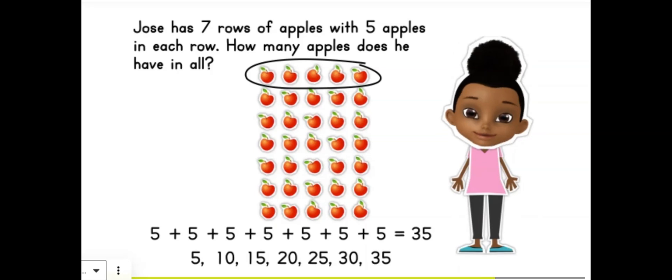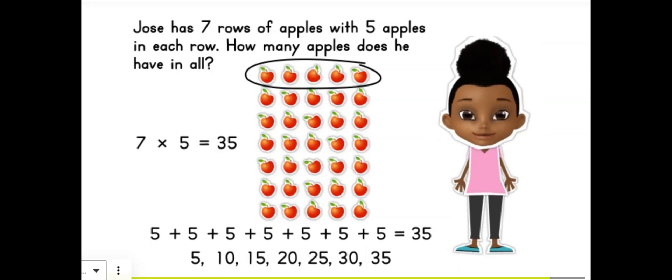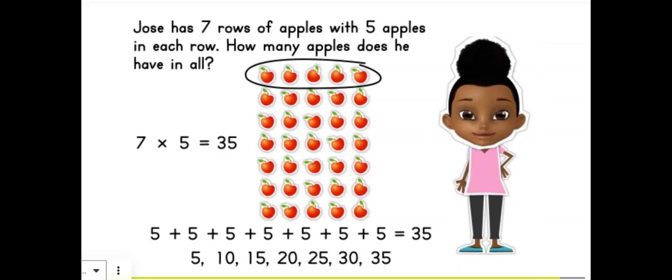We can also use multiplication to find the total in an array. We can say 7, the number of rows, times 5, the number of columns, equals 35. Wow, that makes solving word problems so much easier! Sure does — now you have a few new ways to help you solve word problems!